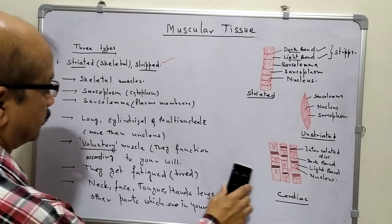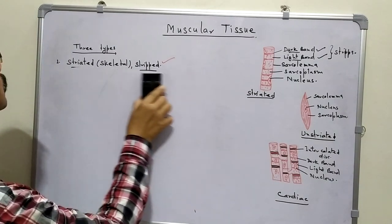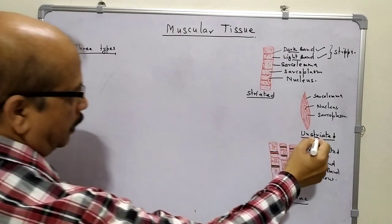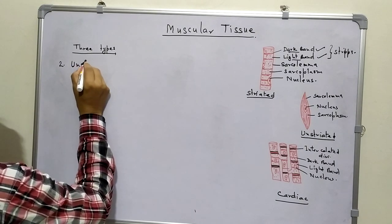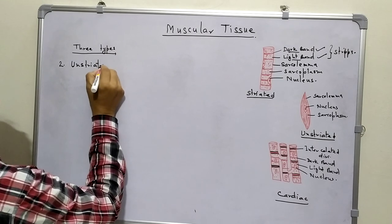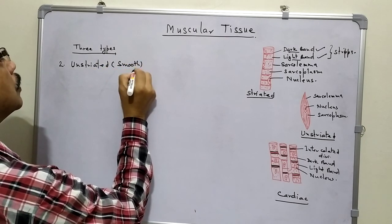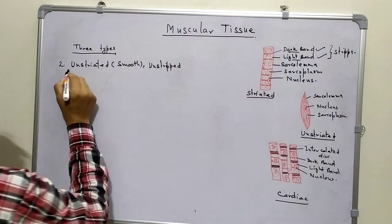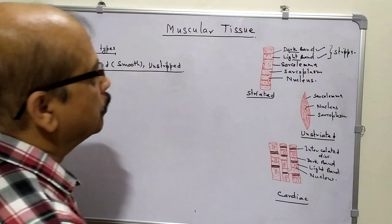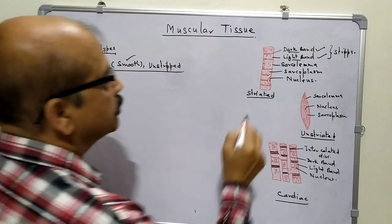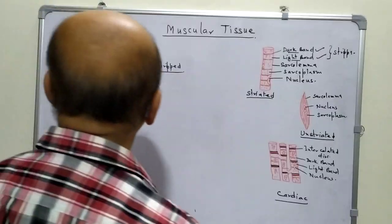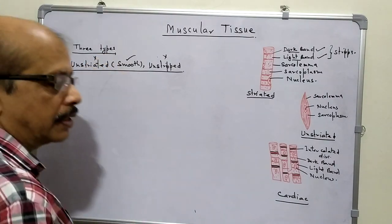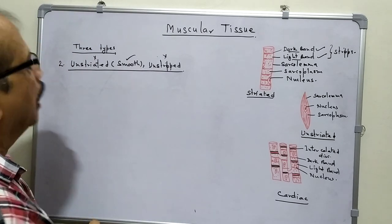Now the second type: unstriated, smooth, or unstriped muscles. Why are they called smooth? Because light and dark bands are not present, so they are smooth in appearance and unstriped. Since they are smooth, there are no strips - so they are known as unstriated and unstriped muscles.